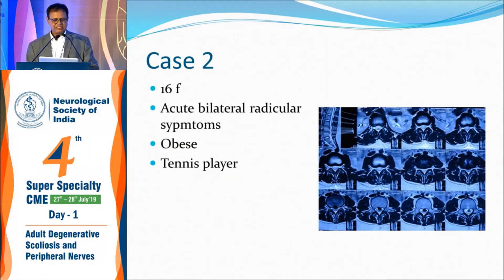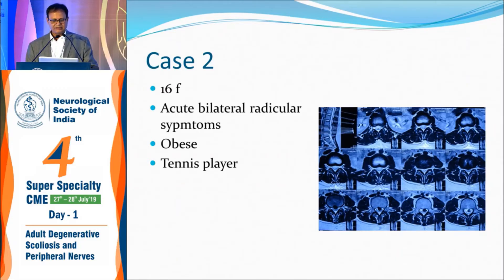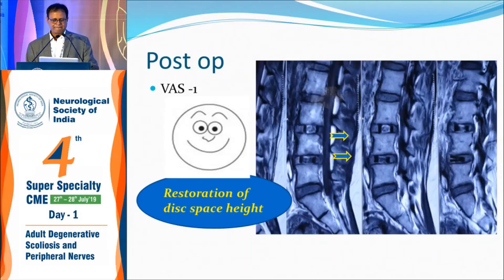Case 2 was a 16-year-old girl, a tennis player, who came with bilateral radicular symptoms and obesity, wanting to play tennis after surgery. MRI showed a central disc herniation. Because she was obese, a simple discectomy was thought to be insufficient for her needs and activity goals. So we did an OLIF — a two-level procedure. Before taking her for posterior fixation, we did an immediate post-op MRI, which showed the disc height had reduced and the central disc compression had fortunately resolved. As this was not approved as stand-alone, we went ahead with percutaneous posterior fixation also.